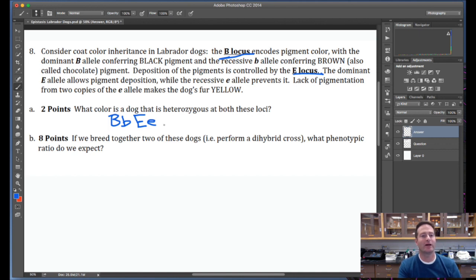I write like a second grader. That is its genotype. If it's heterozygous, it means it has a dominant allele for the pigment color, which means it's black. And because it has a dominant allele for the pigment deposition locus, it means that black pigment can be deposited. So this dog is black. That's two points.